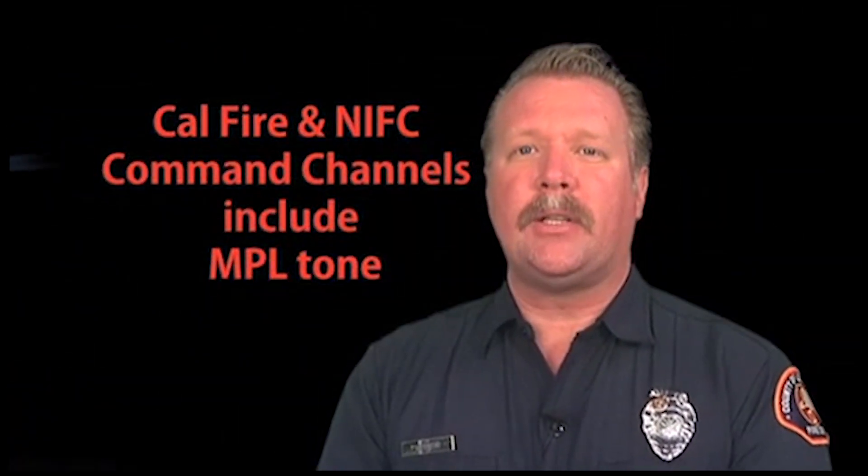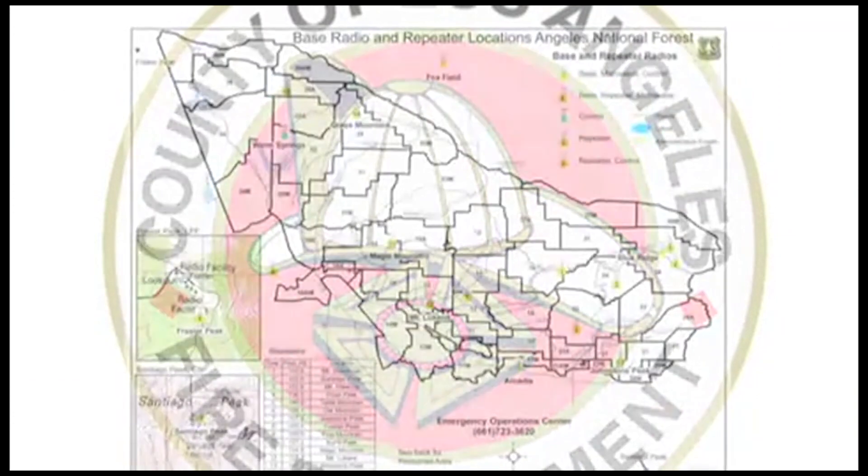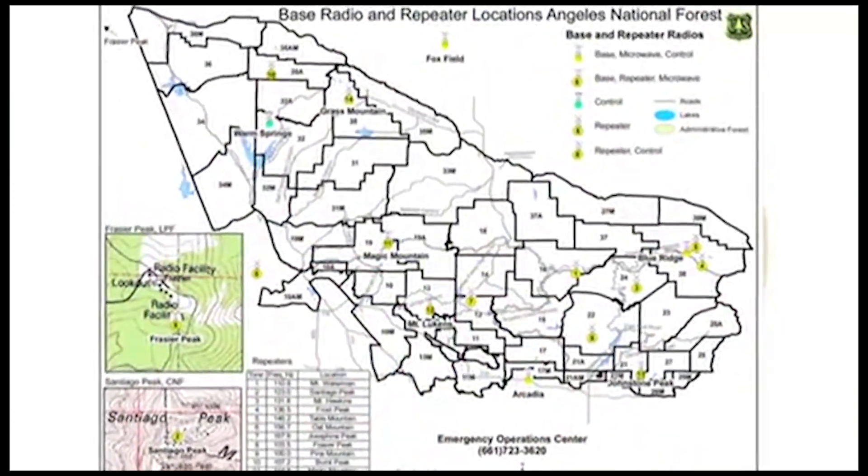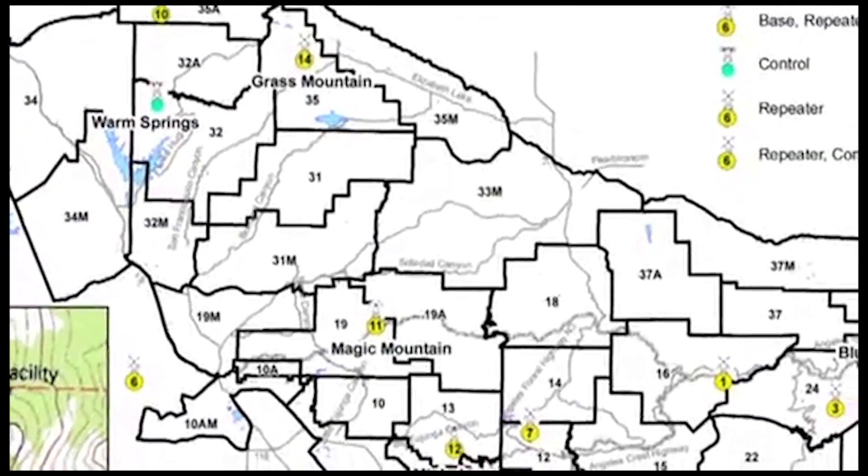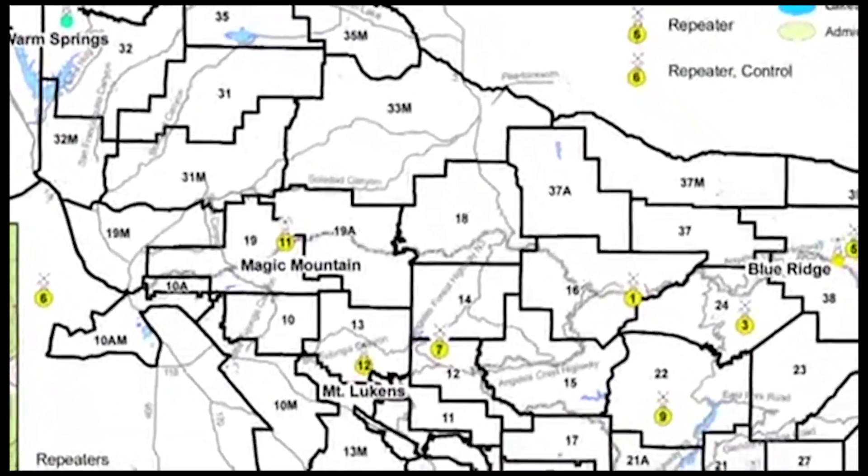Our radios include many channels from several different agencies. Some of these channels require the user to select a specific tone to transmit and receive. An example of this is CAL FIRE command channels and NIFC tactical and command channels. These channels include a multiple private line or MPL tone feature. MPL tones allow access to repeaters in specific geographic areas. Selecting the appropriate tone allows for the best transmissions within a specific area.